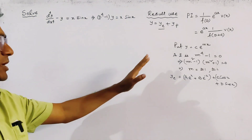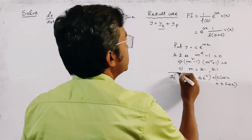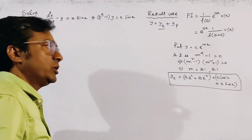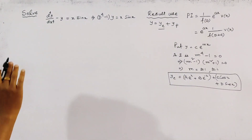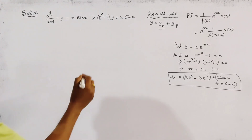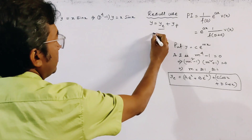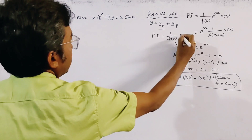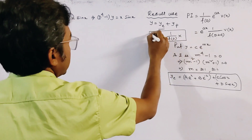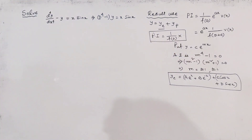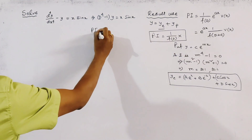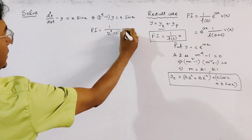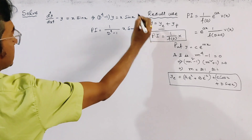This is the complementary function, the first part of the problem. Now we have to find the particular integral. The particular integral is given by 1 over f(D) into the right-hand side, so PI equals 1 over (D^4 − 1) times x·sin(x).